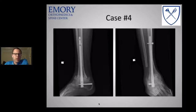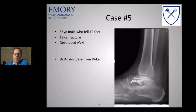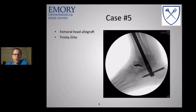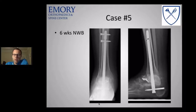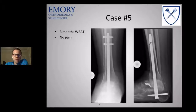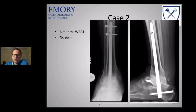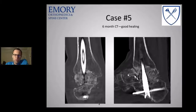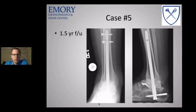Here's a case from Sam Adams at Duke: a patient with a bad talar fracture that progressed to AVN. He performed a TTC with the Dynanail using a femoral head allograft packed with Trinity Elite. At six weeks, all hardware was in good position. At three months, the patient was weight-bearing as tolerated with no pain. At six months, there's great incorporation of the femoral head with healing across both joints on two views. I think this is a tremendous result and a great example of what bulk allograft with the Dynanail can achieve.